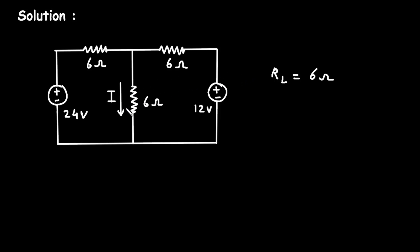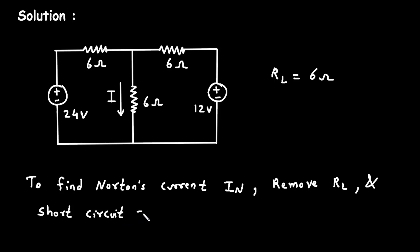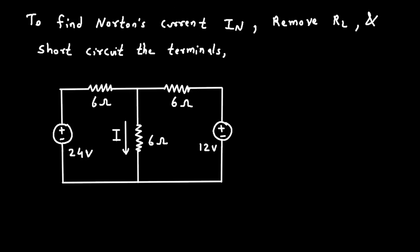First of all, we will find the value of Norton's current. To find Norton's current IN, what we will do is remove RL and short circuit the terminals. So let's short circuit the terminals. We have to find Norton's current, so we will remove this RL. This is the load resistor.